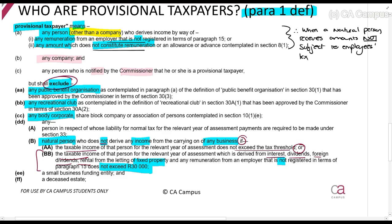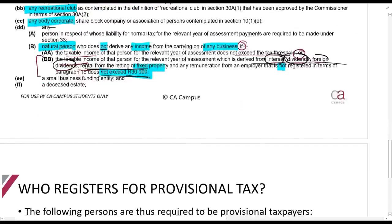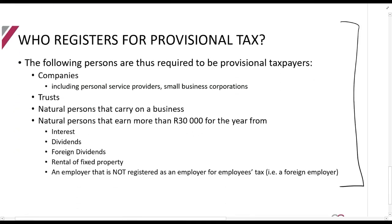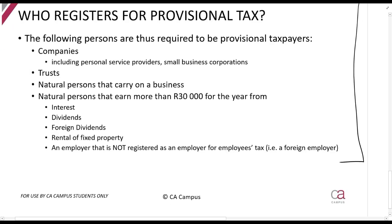To summarize: if you're carrying on a business, you are definitely going to be a provisional taxpayer. If you're not carrying on a business, then you don't have to be a provisional taxpayer unless the interest, dividends, foreign dividends, and rental from fixed property exceeds R30,000 — in which case you must be a provisional taxpayer. If those amounts do not exceed R30,000, you are excluded. For most exam questions, you will also be told who the provisional taxpayers are.